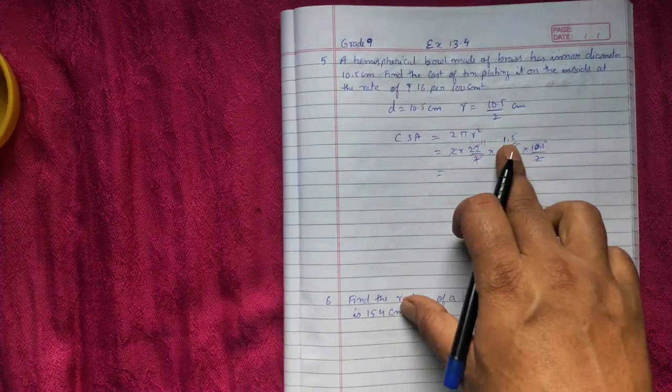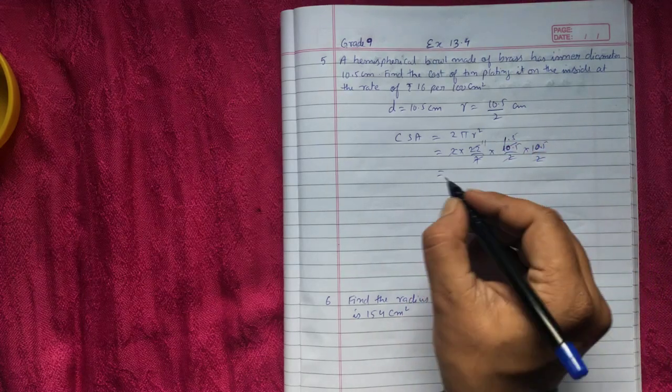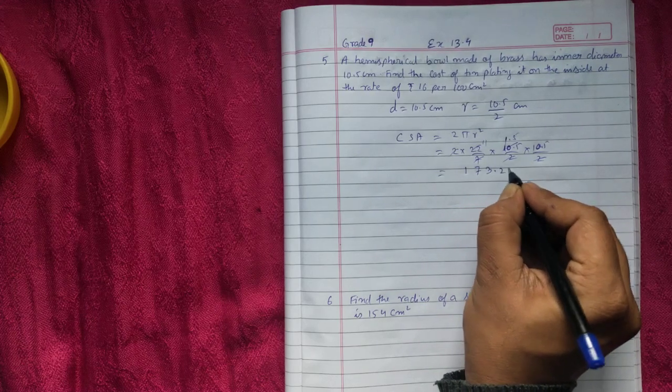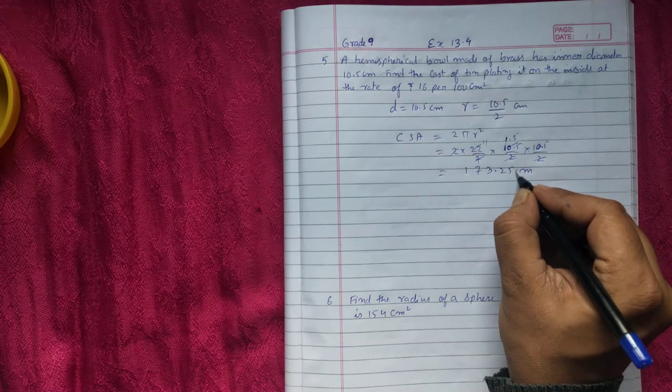At 11 times 1.5 times 10.5, if you multiply, you'll get 173.25 times 2 cm square.